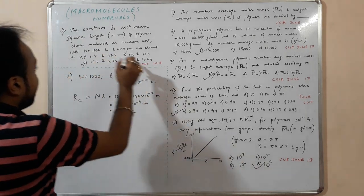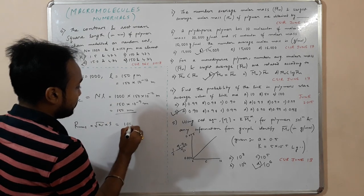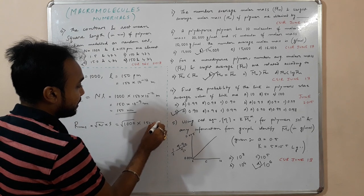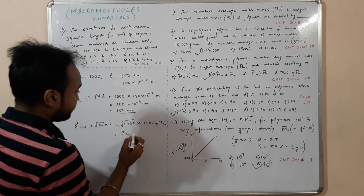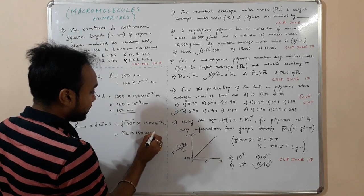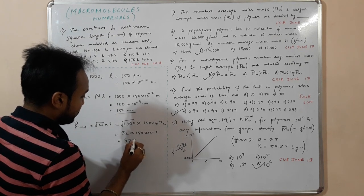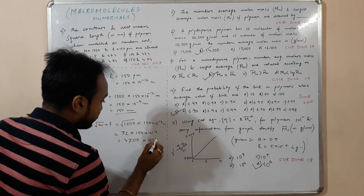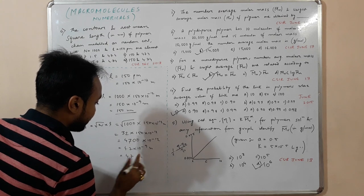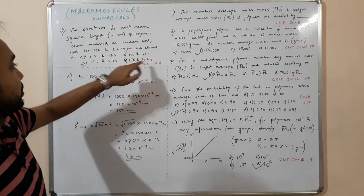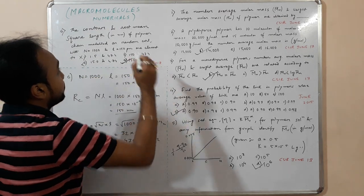Now for the root mean square length: √(N) × L = √1000 × 150 × 10⁻¹² m. Since √1000 ≈ 32, this gives 32 × 150 × 10⁻¹² ≈ 4700 × 10⁻¹² m = 4.7 × 10⁻⁹ m = 4.7 nm. So the contour length is 150 nm and the root mean square length is 4.7 nm. The correct answer is option 4.